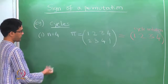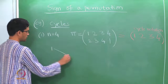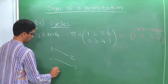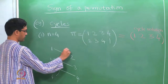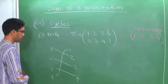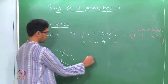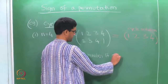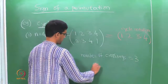So what is the sign of this pi? Let us draw the tangle diagram: 1 maps to 2, 2 maps to 3, 3 maps to 4, and 4 maps to 1. This satisfies all the rules for drawing tangle diagrams correctly. Counting the crossings, we get 1, 2, and 3. So the number of crossings is 3, and the permutation pi is odd.